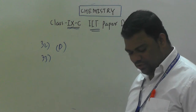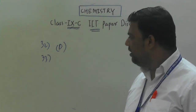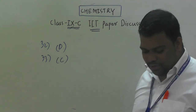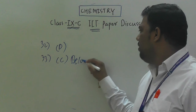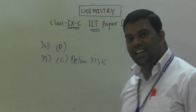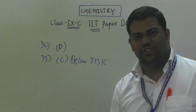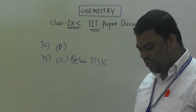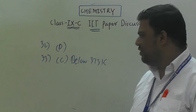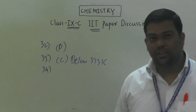Question number 33: at Darjeeling, distilled water boils at what temperature? The option is below 373 K. Water boils at a lower temperature in Darjeeling because Darjeeling is at a higher altitude, so water boils at a lower temperature than normal.